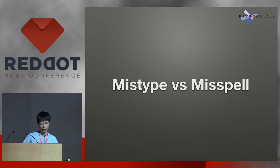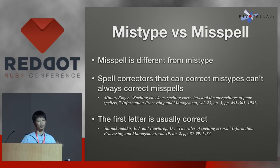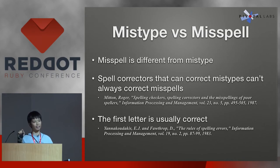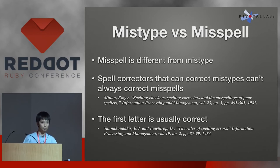You may already realize it, but sometimes I say 'mistype' and sometimes I say 'misspell,' and they are actually different. A study said that spell correctors that can correct mistypes can't always correct misspells. It is easy to correct mistypes because you can calculate edit distance — if you try to hit A and accidentally hit S, there will be just one character difference. But when it comes to spelling mistakes, like you don't remember the method name correctly, you try to guess but it doesn't always catch the right one.